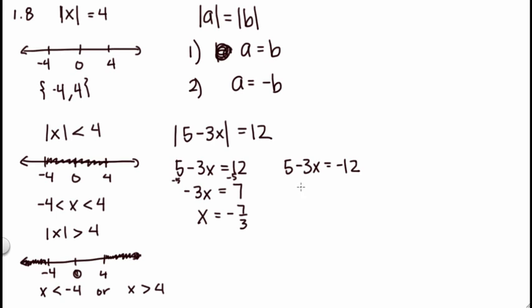And then for this one I also subtract 5, but my result is going to be negative 17. And then if I divide by negative 3, I get 17 over 3. So my two results are negative 7 thirds and 17 thirds. So my solution set is negative 7 thirds or 17 thirds, and that's for equality.